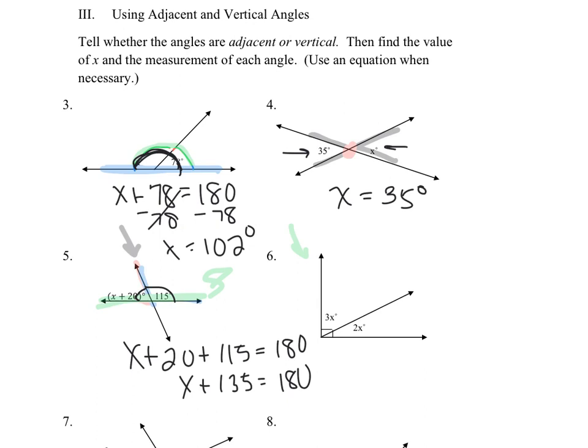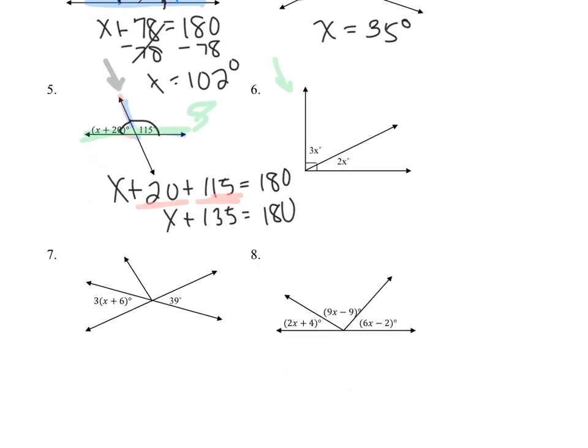This one here and this one here, these are like terms. So I can put those together. And then I'm going to subtract 135 from both sides. And I'm going to get X equals 45. So X's value is 45. The measure of this angle is not 45. The measure of this angle is going to be 45, which is what X is, plus the 20. So you're going to get the measure of that angle is 65 degrees.